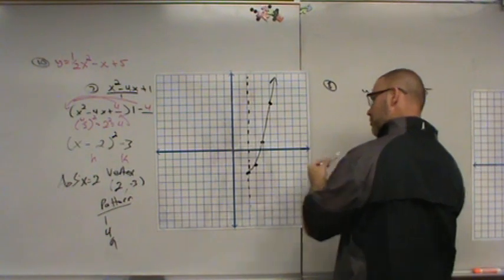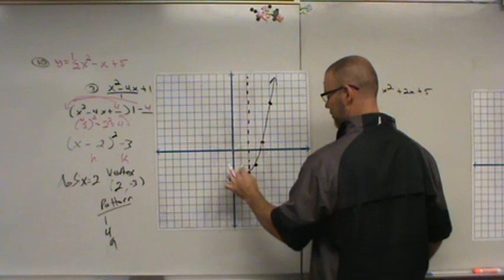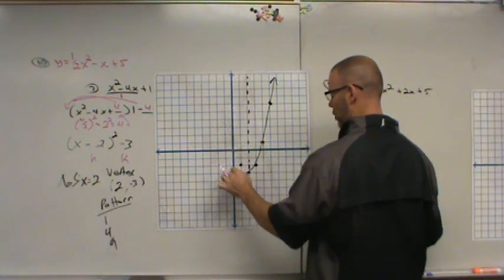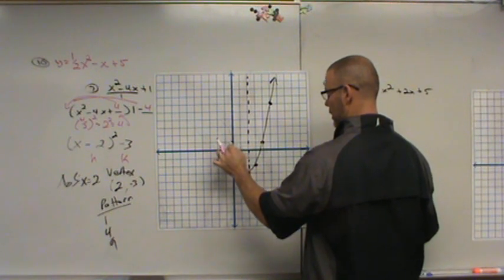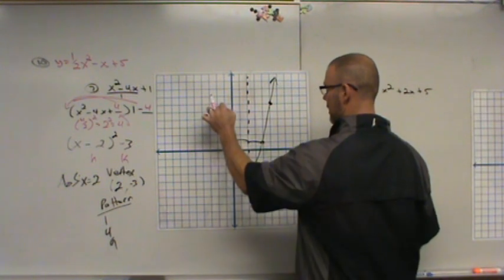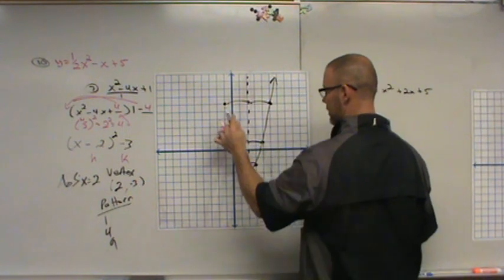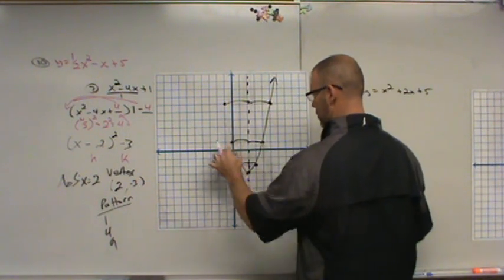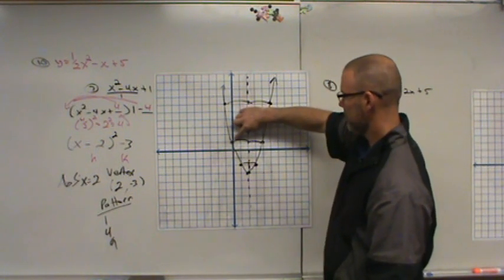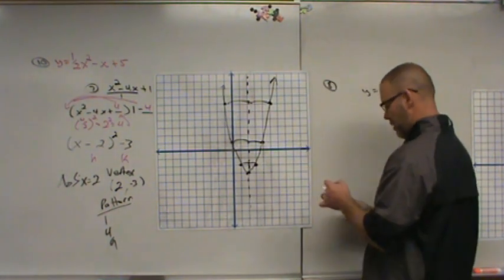But I'm going to complete that same process or repeat that same process on the other side here. I'm going to go left one and up one. I'm going to go left two and up four. And what you should begin to notice is I'm even. Left three and up nine. And again, I'm even. I'm three on one side, three on the other, two on one side, two on the other, and so on. And then there's my graph. This point right here, zero and one, should be my y-intercept. And if I look at my original equation, c is one. So I know I've graphed it correctly.